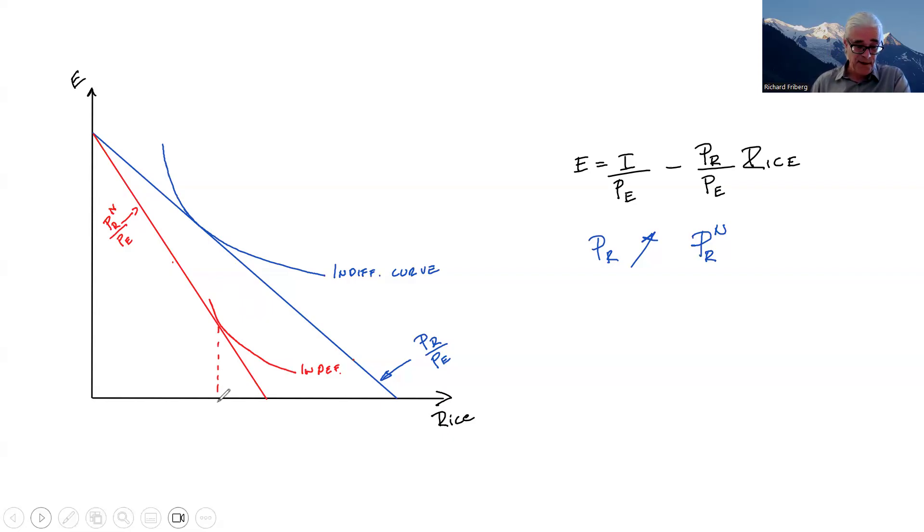We have the total effect here. The price of rice goes up, and note that this is positive. So the price of rice goes up and this consumer is consuming more rice. That's the whole point of the Giffen good. Now we're going to examine what in terms of income and substitution effects is driving this somewhat paradoxical result.